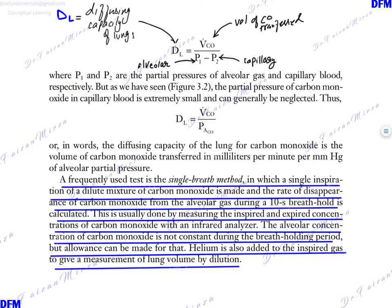So when we are calculating the diffusing capacity of lung, what do we do? We use this formula. We allow a person to take in a very diluted sample of carbon monoxide to be inhaled and we use this formula to calculate the diffusing capacity. So DL here represents the diffusing capacity of lungs. VCO is the volume of carbon monoxide transferred. P1 is the alveolar pressure and P2 is the capillary pressure of that particular gas which is carbon monoxide.